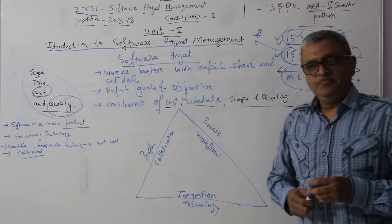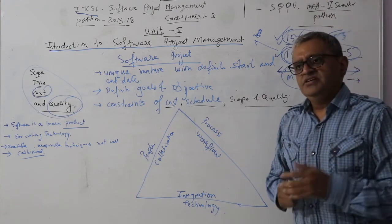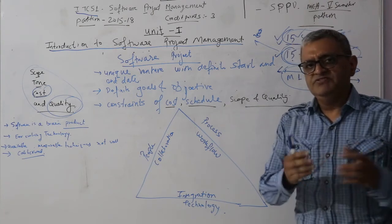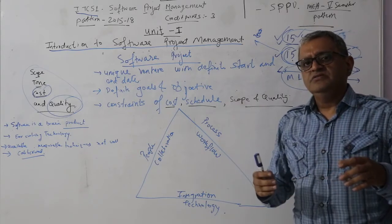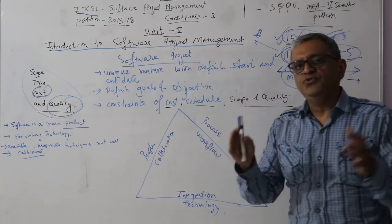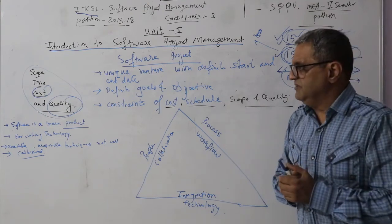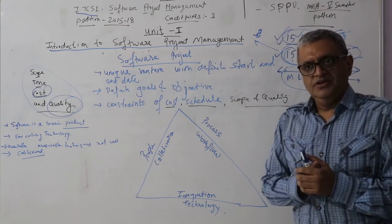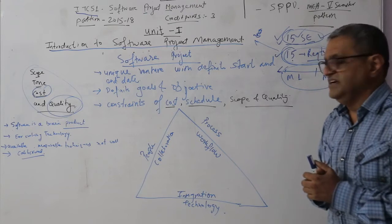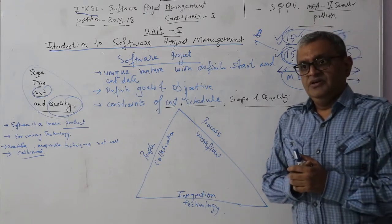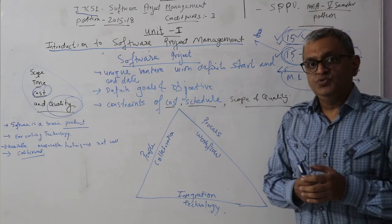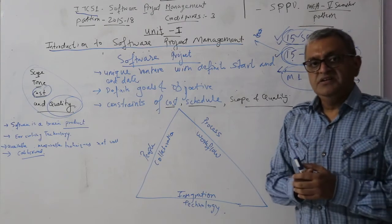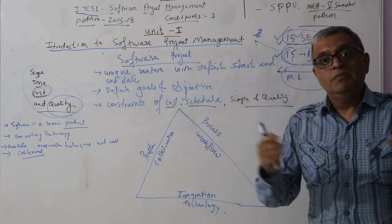This is a classic example of how these four parameters are linked and how a software project manager needs to balance them. Traditional project management — meaning project management in non-software industries — is very mature, has well-set processes, and the engineering activities within those processes, be it manufacturing or any other vertical, are very well measured.